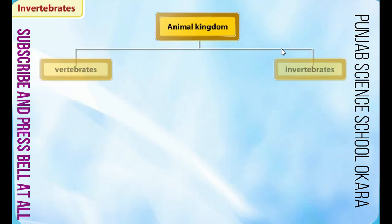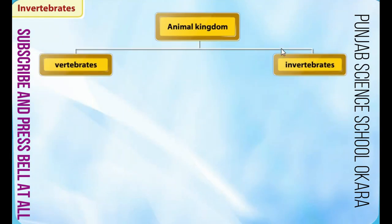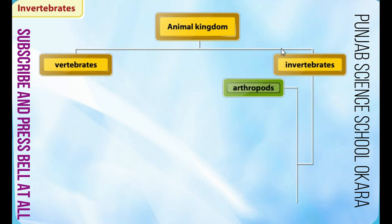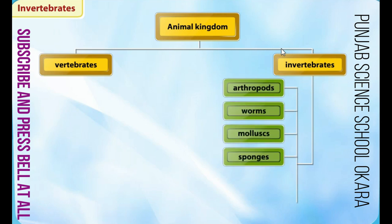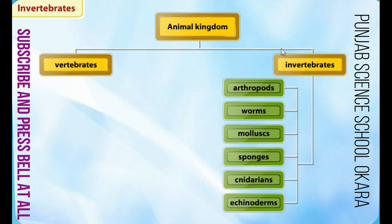Invertebrates can be divided into six main classes. They are arthropods, worms, mollusks, sponges, cnidarians, and echinoderms.